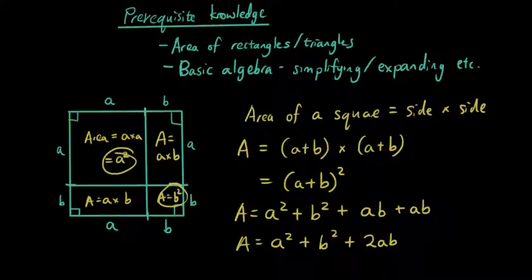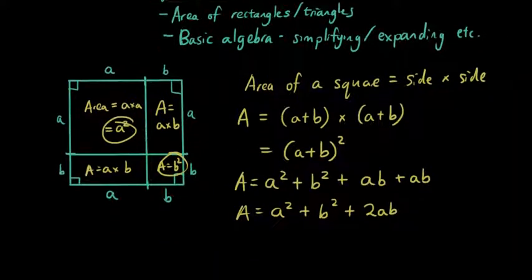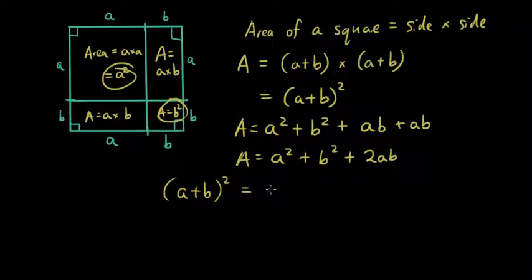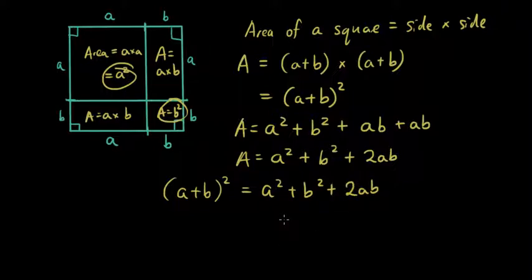You can see here I have given you a graphical illustration of the formula: A plus B squared equals A squared plus B squared plus 2AB. Which is pretty cool.